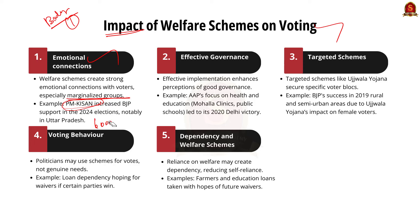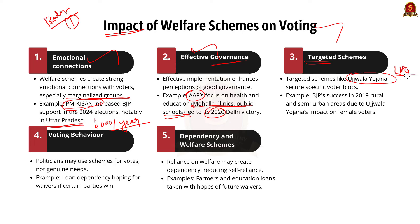Secondly, effective implementation of welfare schemes can enhance the perception of good governance. For example, the Aam Aadmi Party in Delhi gained traction through its focus on health and education — evident in the Mohalla Clinics initiative and improvements in public schools — contributing to AAP's overwhelming victory in the 2020 Delhi assembly elections. Thirdly, targeted schemes like Ujjwala Yojana, which provides free LPG connections to women from below poverty line, were instrumental in securing votes from female voter blocks. The BJP's success in rural and semi-urban areas in the 2019 general elections can be partially attributed to such schemes.